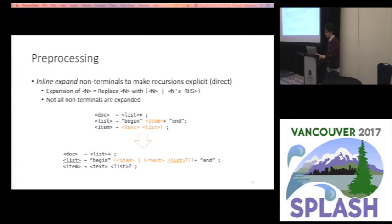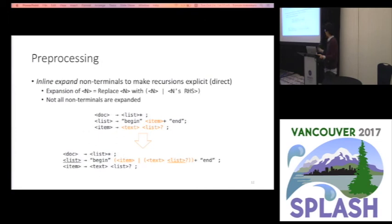The first step of our translation is preprocessing, which inline-expands non-terminals to make recursion explicit. In this step, the input grammar shown on the upper side is rewritten into the grammar shown on the bottom. The inline expansion of non-terminal N is a replacement of non-terminal N with the union of N and the right-hand side of N. Importantly, this operation modifies the grammar but does not add or remove non-terminals, so it does not make the generated subchaining API meaningless.